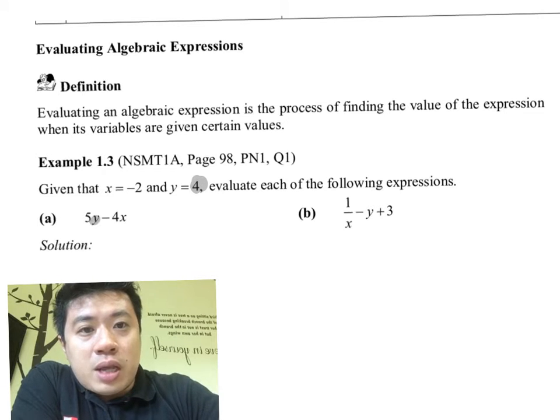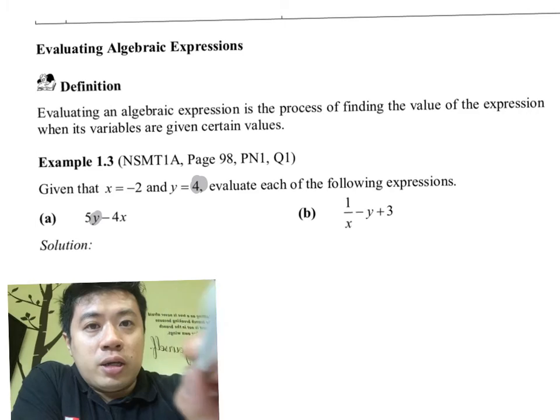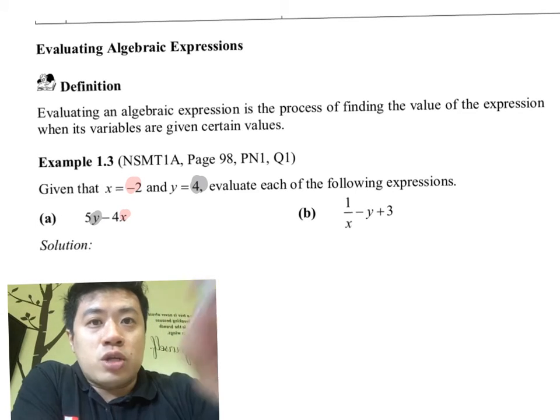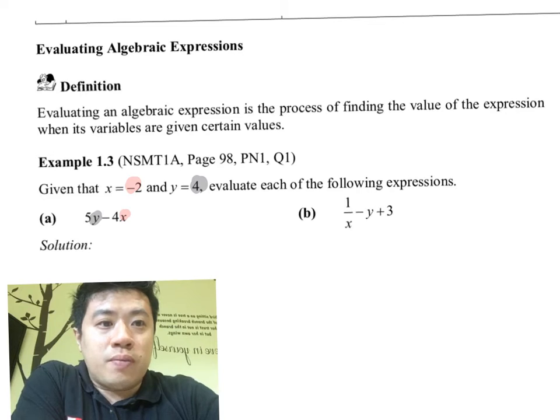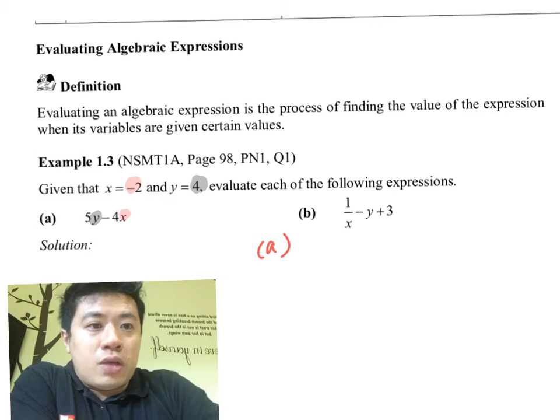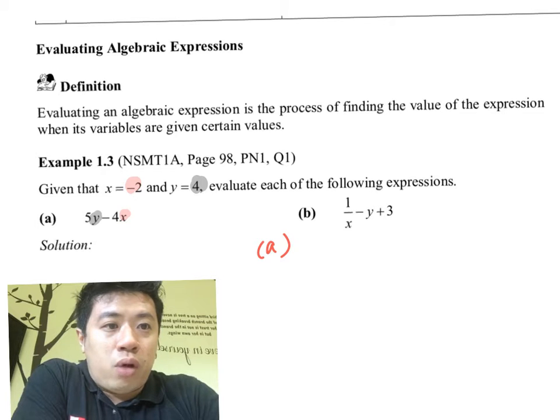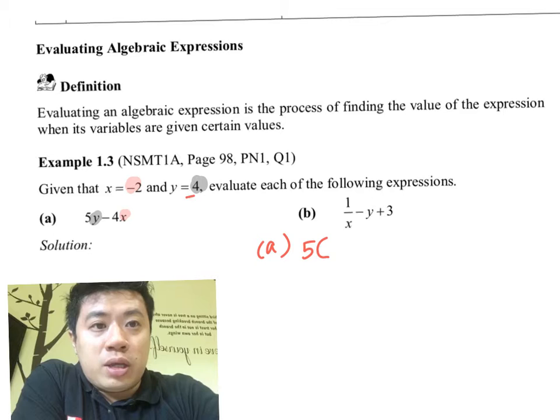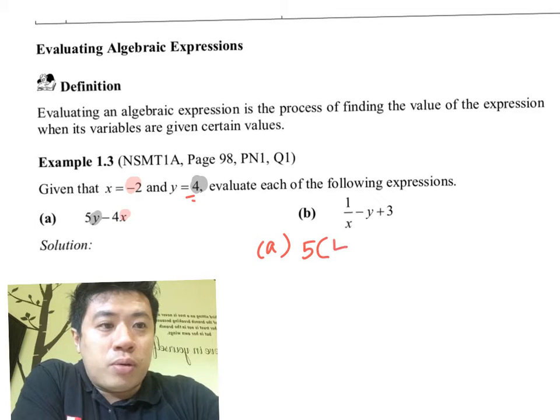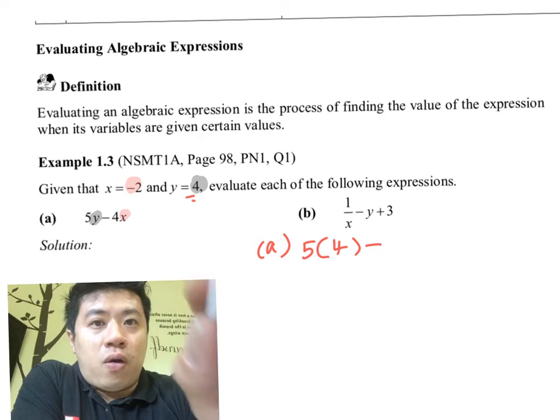For part (a), if we let x as negative 2 and y as 4, we get 5 times 4. Remember we are putting 4, so instead of y we are putting 4. Then we have minus 4 times x. Our x is replaced with negative 2.